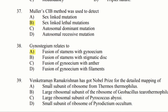Question 39: Venkatraman Ramakrishnan has got the Nobel Prize for the detailed mapping of. Option A: small subunit of ribosome from Thermus thermophilus. Option B: large ribosomal subunit of Geobacillus stearothermophilus. Option C: large ribosomal subunit of Pyrococcus abyssi. Option D: small subunit of ribosome of Pyrodictium occultum. The answer is option A, small subunit of ribosome from Thermus thermophilus.